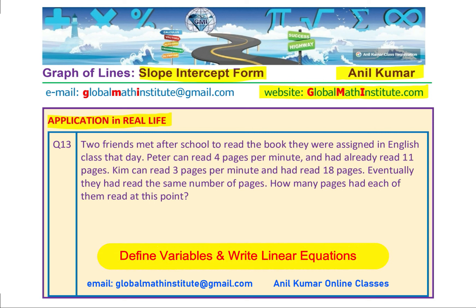Now let us try to think about it and relate the information in terms of an equation. When we say Peter can read 4 pages per minute and had already read 11 pages, it means that 11 was done — fixed. Now, for every extra page, we are given a rate of 4 pages per minute. So we can write an equation for Peter.